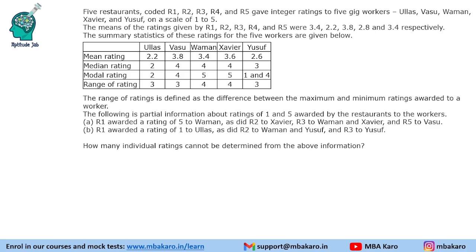They give integer ratings to 5 gig workers — Ullas, Vasu, Vaman, Jaivin, and Yusuf — on a scale of 1 to 5. The means of the ratings given by these 5 restaurants are also given to us. Mean means average. So there are 5 restaurants and 5 workers, and we will multiply by 5 to get the total rating. The summary statistics of these ratings for the 5 workers are given below.